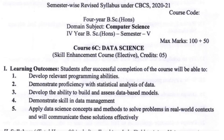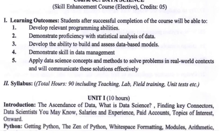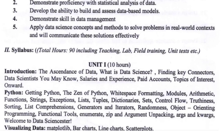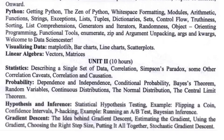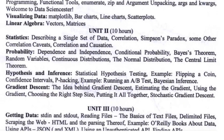The 6C paper title is Data Science. Unit 1 has four topics: first, Introduction; second, Python; third, Visualizing Data; fourth, Linear Algebra. Unit 2 has four topics: first, Statistics; second, Probability; third, Hypothesis and Inference; fourth, Gradient Descent.